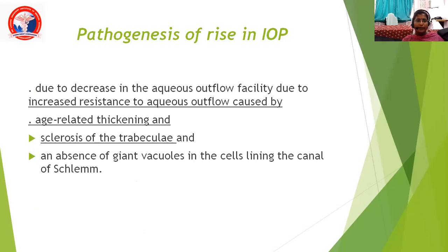The pathogenesis of rise in intraocular pressure occurs due to decrease in aqueous outflow facility, caused by increased resistance to aqueous outflow. This can be due to age-related thickening and sclerosis of the trabeculate, and absence of giant vacuoles in the cells lining the canal of Schlemm.